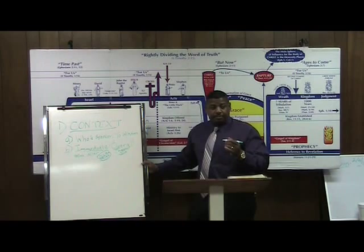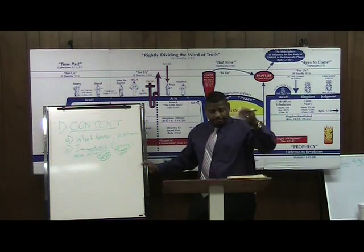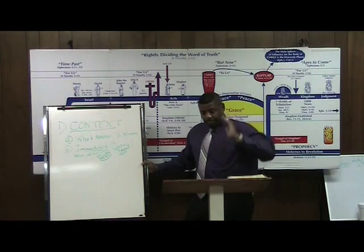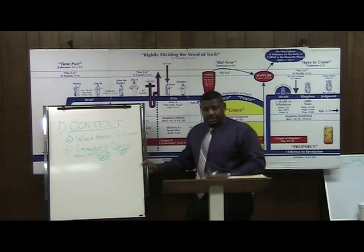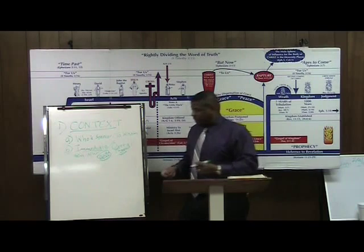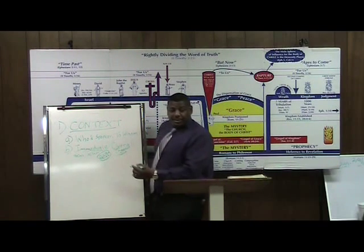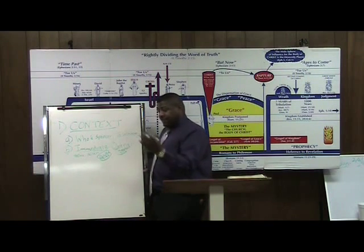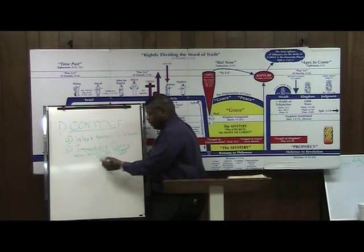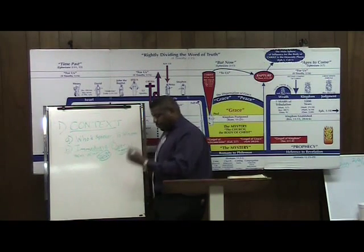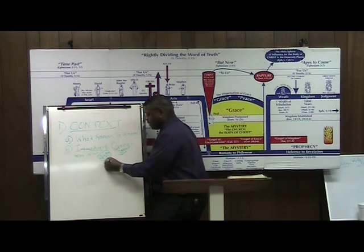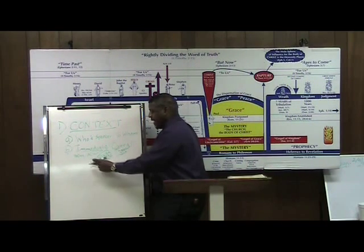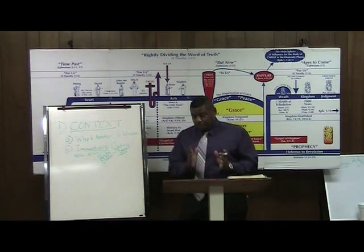In Mark, he doesn't have a genealogy. Mark just starts off — Jesus Christ — straight away, because he's a servant. Matthew has a genealogy going back to David, the Davidic covenant, the Abrahamic covenant. Mark has no genealogy because he's a servant. Luke shows him as the magnificent man — his humanity goes all the way back to Adam. This is where you see him at 12 years old in the temple, not recorded anywhere else.